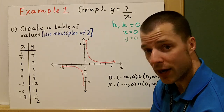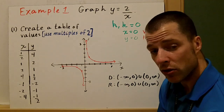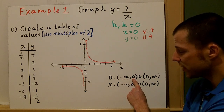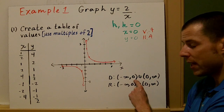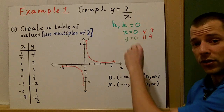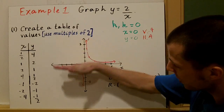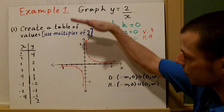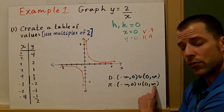Because x and y are both 0, I have restrictions on my domain and range. X can't be 0, so the domain goes from negative infinity to 0, union with 0 to infinity — all values except 0. That makes sense because if x is 0 the function is undefined. For the range, looking vertically, y gets really close to 0 but never reaches it, so the range is also negative infinity to 0 union with 0 to infinity.